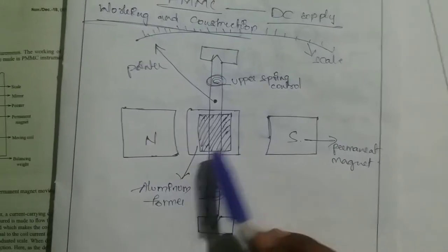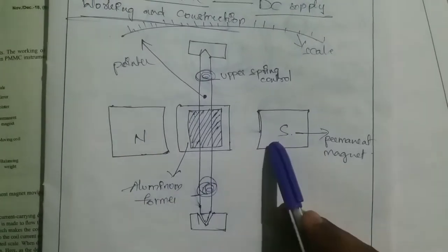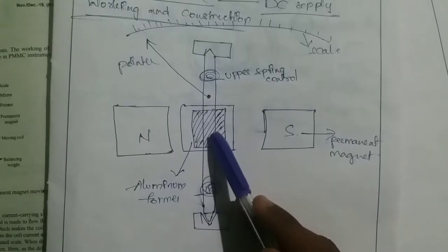Whenever a current carrying conductor is kept in a magnetic field, it tends to move. And here, we can place the current carrying conductor.